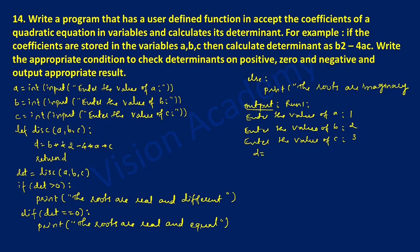Now let us substitute the values a=1, b=2, c=3 into the expression. d equals b squared minus 4ac, so 2 squared minus 4 times 1 times 3. That gives 4 minus 12, which equals minus 8. So d is equal to minus 8. Checking the condition: is determinant greater than 0? No, it is negative, so this condition is false. Then checking the next condition: is determinant equal to 0? No, it is less than 0. Hence the else part executes and it prints the roots are imaginary.